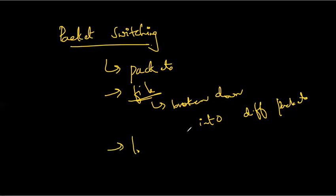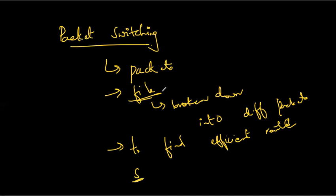Why are we breaking it down? To find an efficient route. Network devices can then route the packets to the destination, where the receiving device reassembles them for use. The sender divides the file into multiple packets, and the receiver must assemble these packets to make it the same as the sender originally had. Whenever we break a file into packets, we assign a sequence number to make sure the order is maintained when the receiver reassembles them.